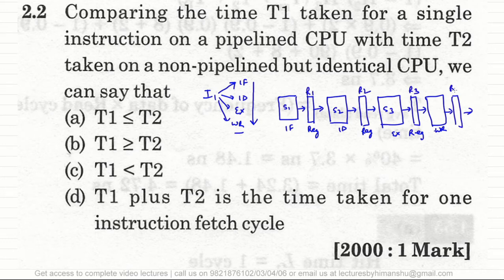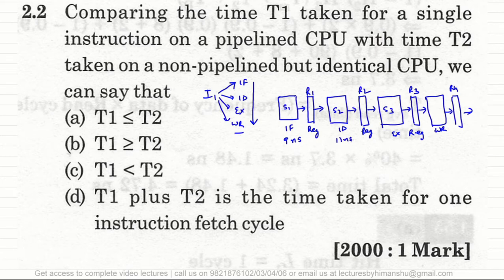Each stage has a different execution time. For example, S1 takes 9 nanoseconds, S2 takes 11 nanoseconds, S3 takes 13 nanoseconds, and S4 takes 8 nanoseconds. The register delay for copying data is assumed to be 5 nanoseconds.